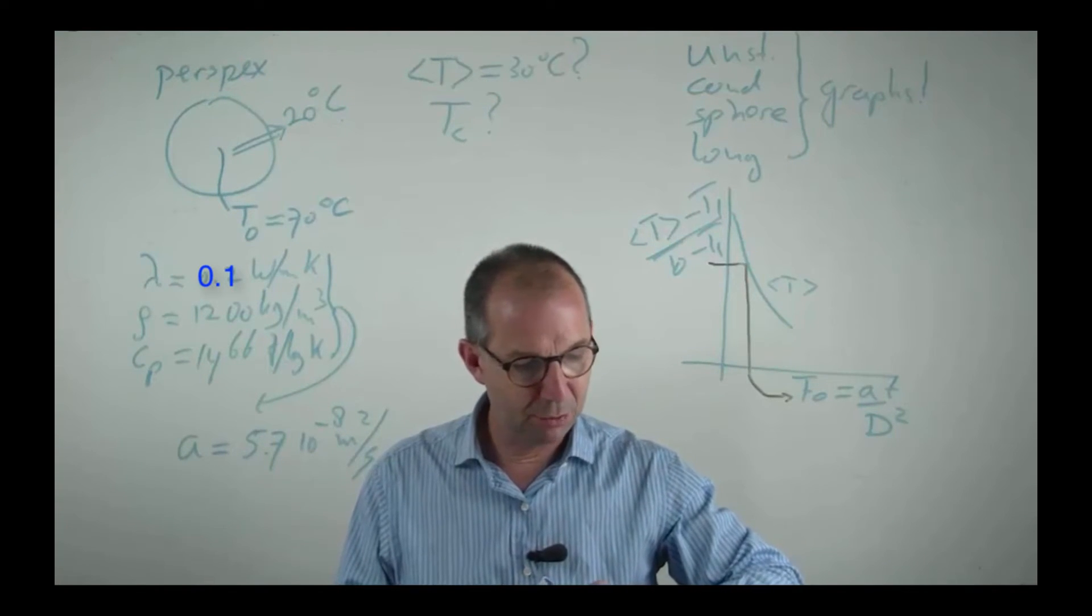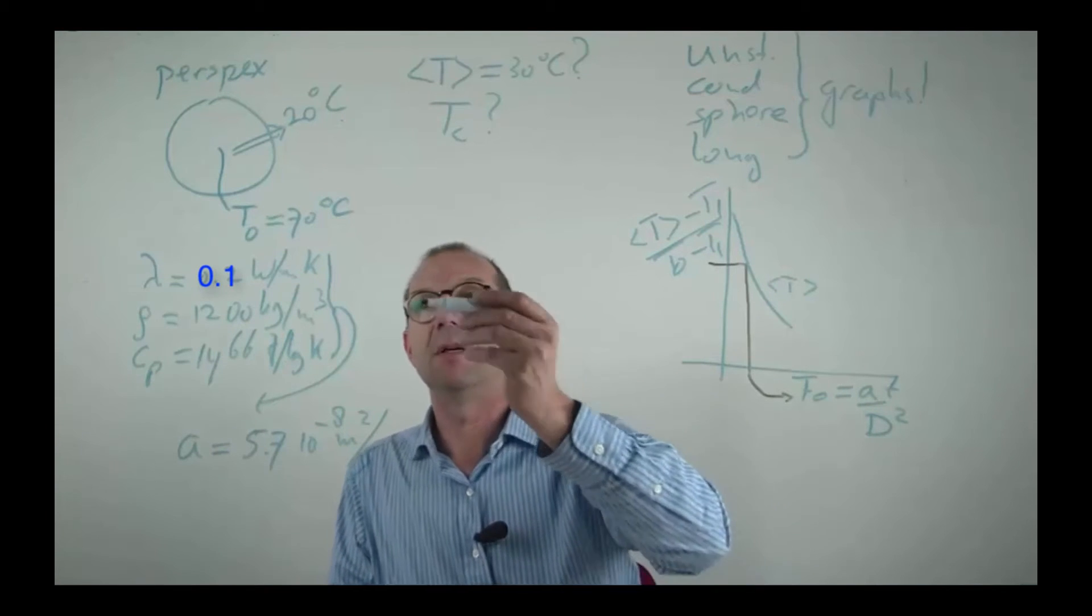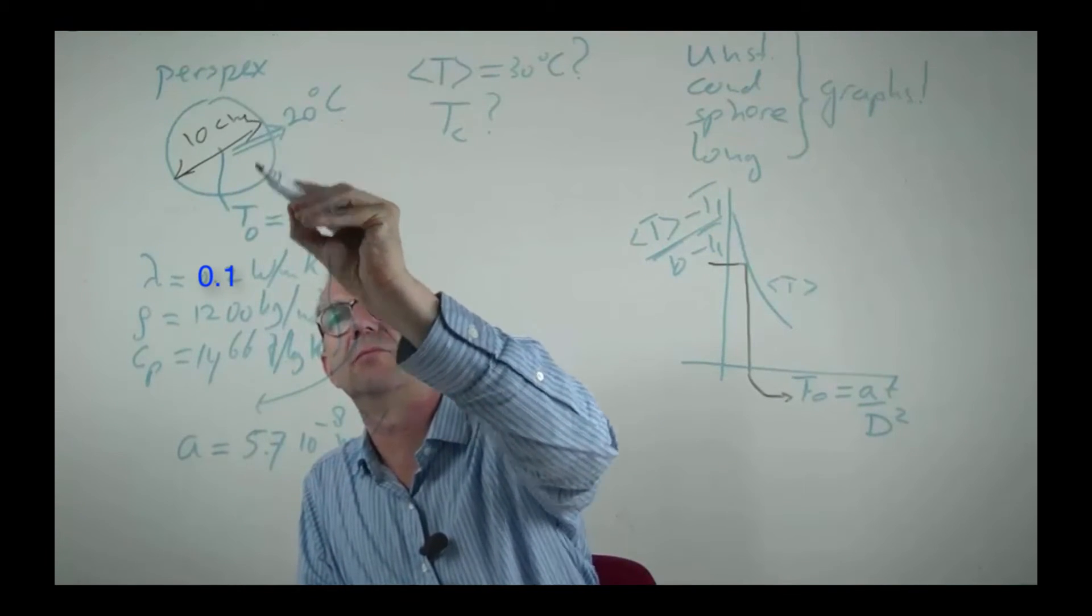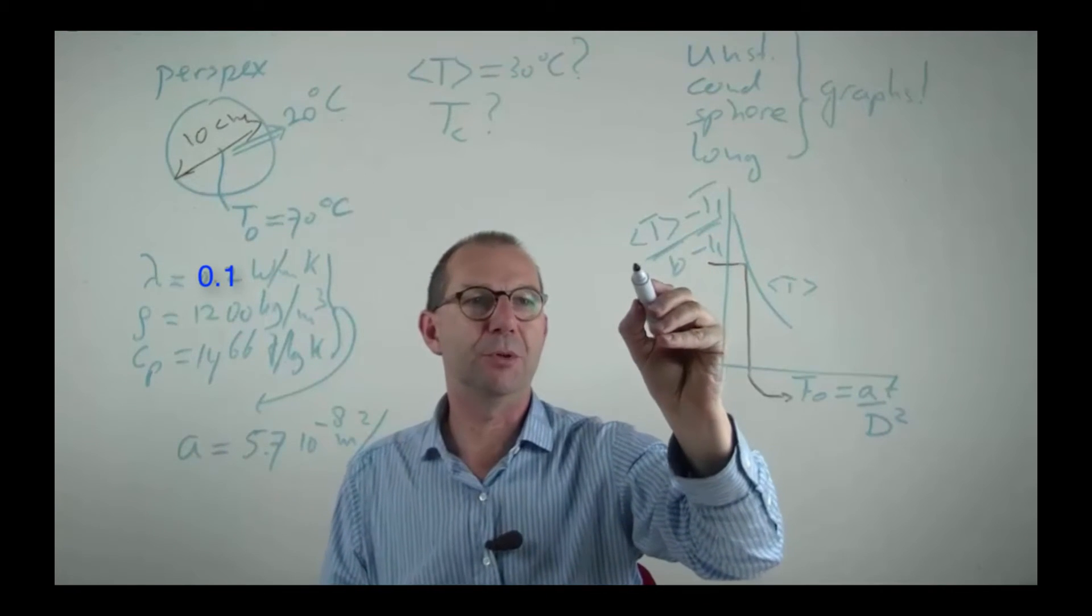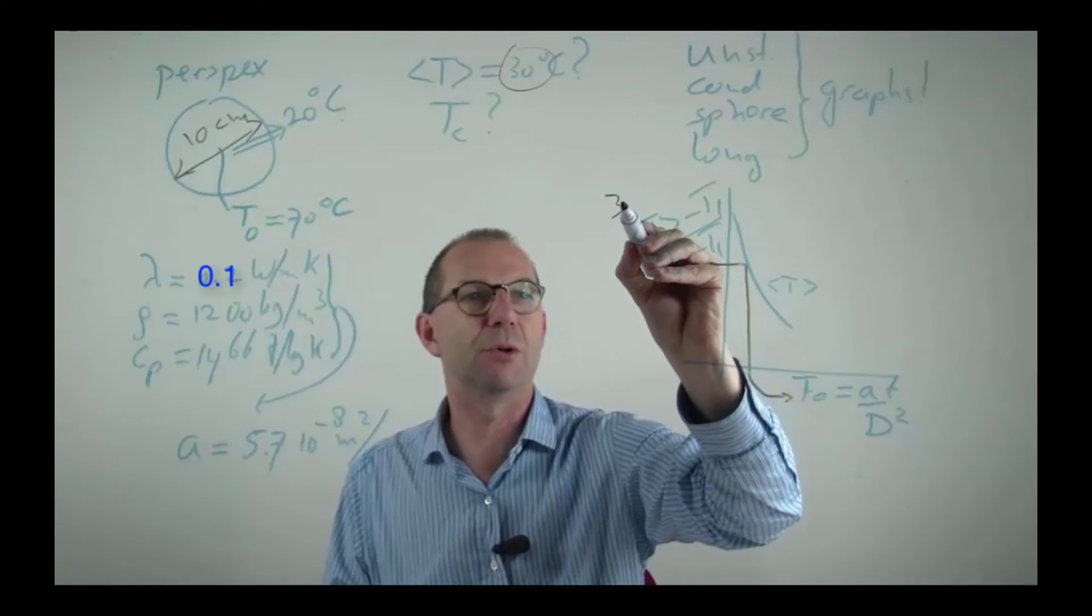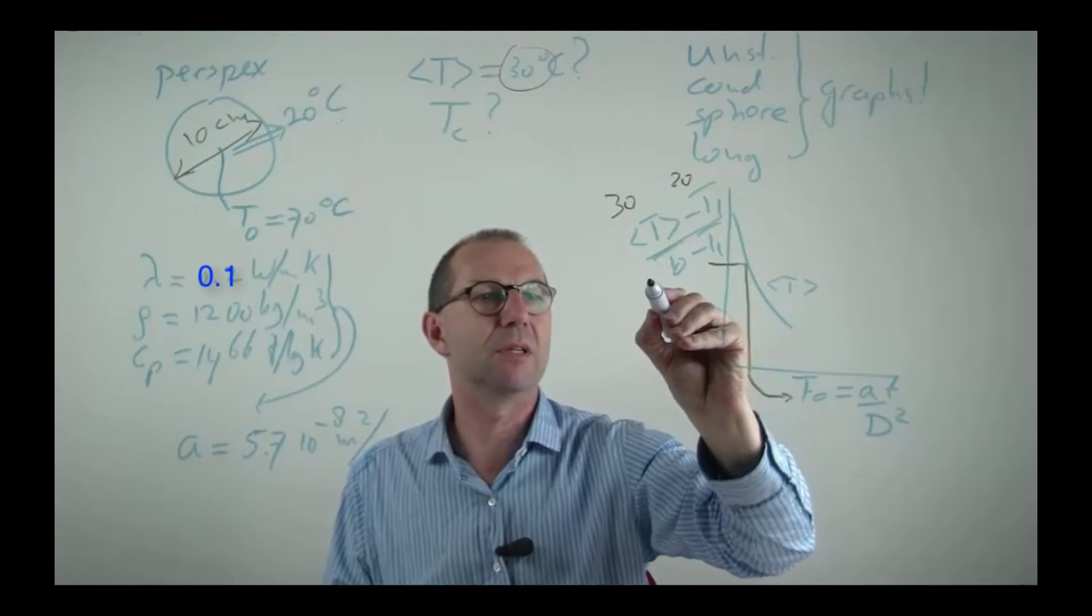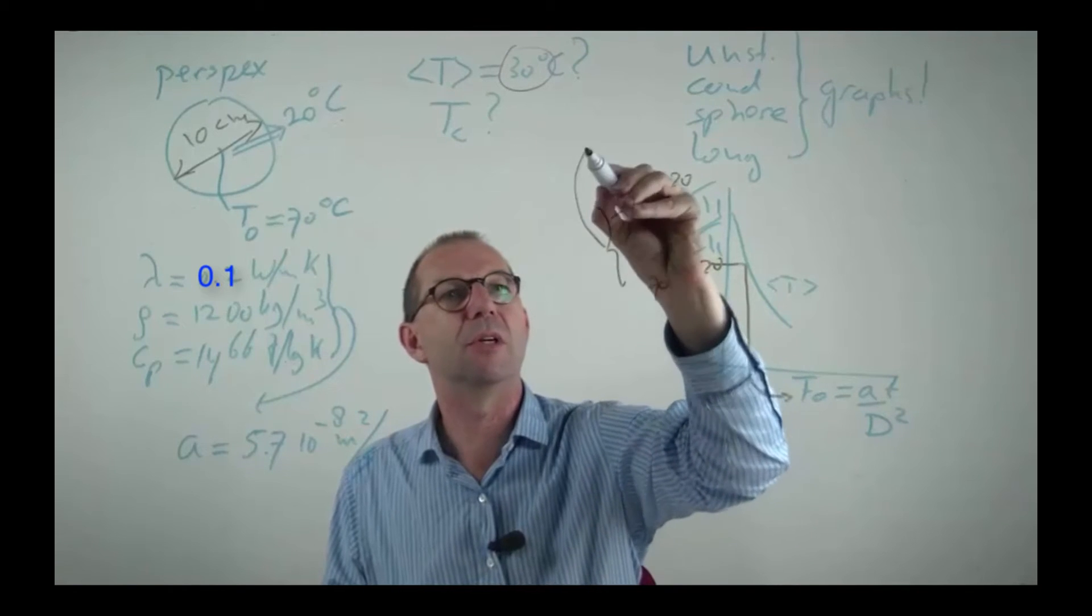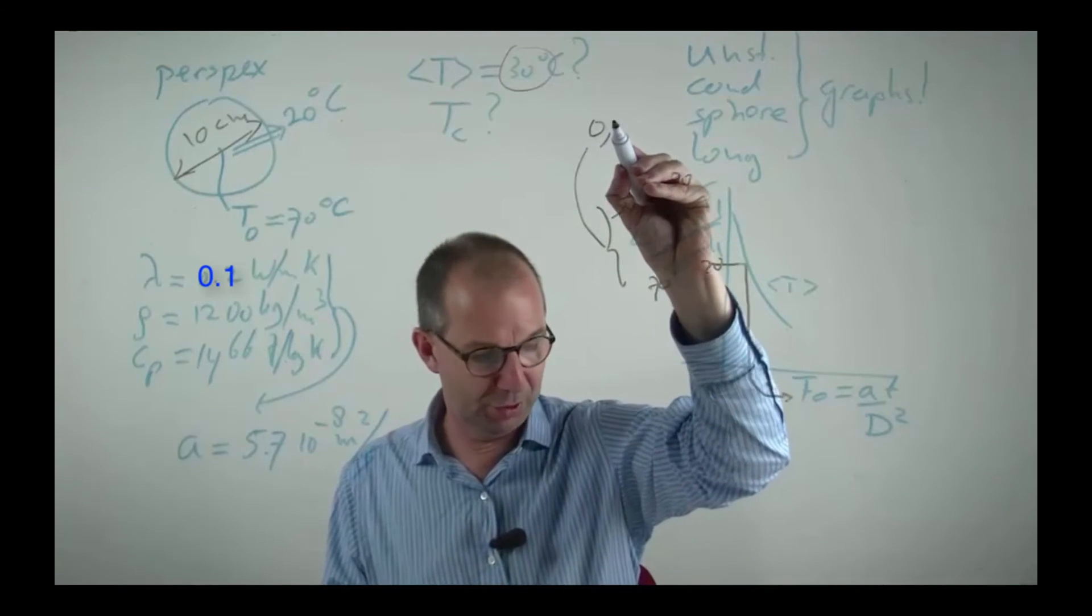Okay, let's do the analysis. D is 10 cm. I compute this value given that I need 30. So this is 30 minus 20 over 70 minus 20, hence I need to read off my graph at 0.2.